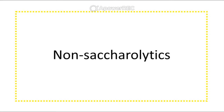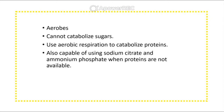Non-sacrolytics are aerobic bacteria that get their name from the fact that they cannot catabolize sugars. They use aerobic respiration to catabolize proteins. You may see tests looking for non-sacrolytics by growing them in sodium citrate medium to see if they can use it as a carbon source, or using ammonium phosphate when proteins are not available.